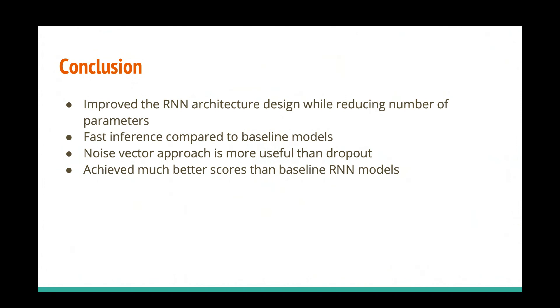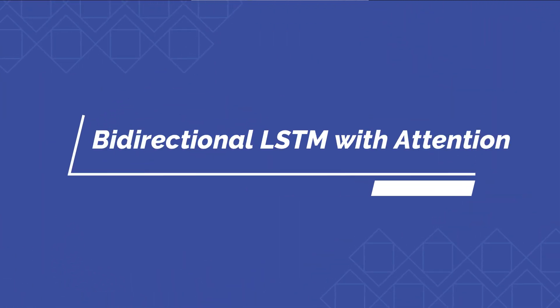Finally, here are the conclusive outcomes from my experiment: I improved the RNN architecture design while reducing the number of parameters; achieved fast inference compared to the baseline model; the noise vector approach is more useful than dropouts; and achieved much better scores than the baseline RNN models. That's all about stock price prediction using bi-directional LSTM with attention. Thank you.